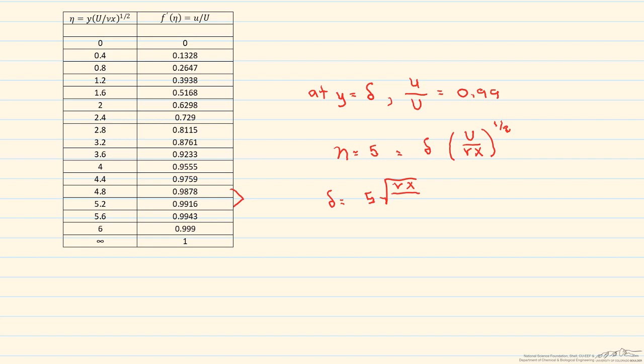Since Reynolds number can be written as U times x divided by the kinematic viscosity, we can write a relationship for delta with respect to Reynolds number. This equals 5x divided by the square root of the Reynolds number based on x.